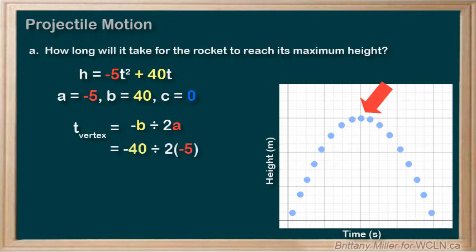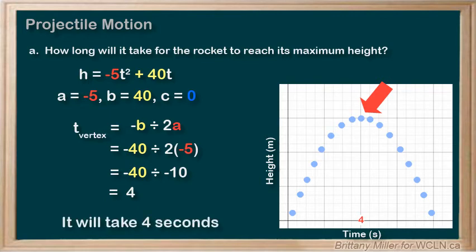-40 / (2 × -5) = -40 / -10 = 4. So, after 4 seconds, the rocket will reach maximum height.